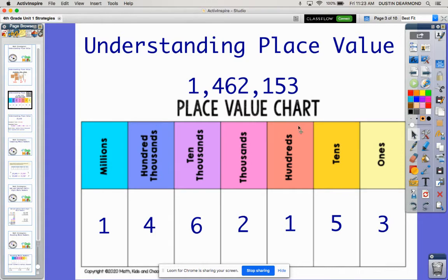So here's a place value chart. Again, you've worked a lot with ones, tens, and hundreds as you were in first, second, third grade, and we've moved into some bigger numbers. And now as fourth graders, we're going to go all the way up to the millions place.